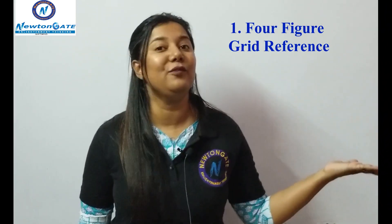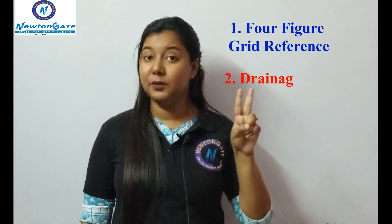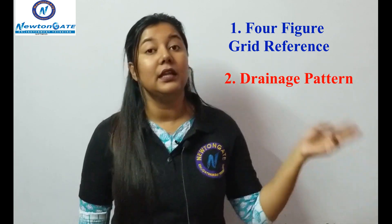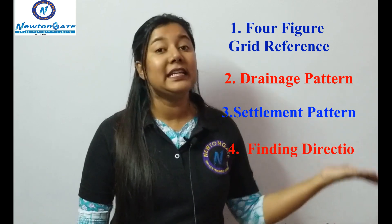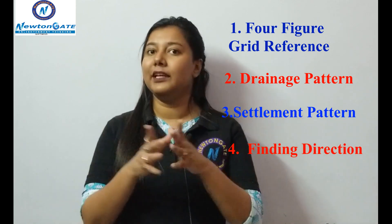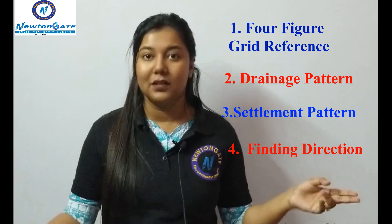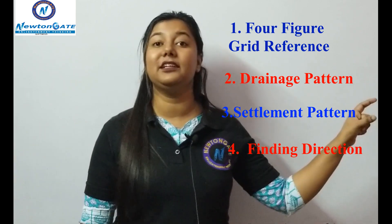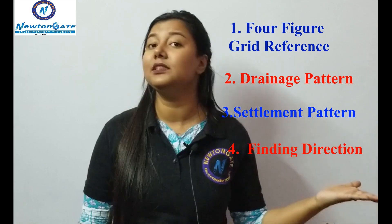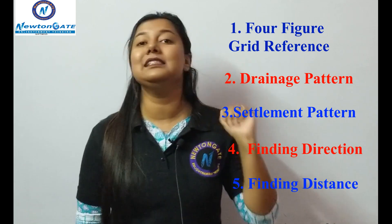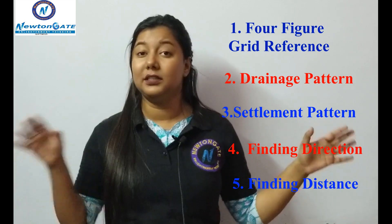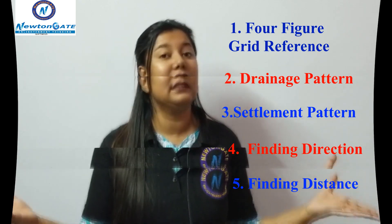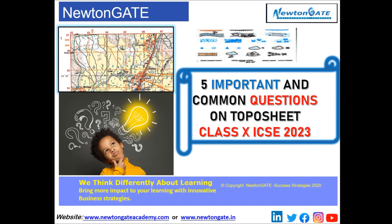Number one: four-figure grid reference. Number two: drainage pattern. Number three: identifying the settlement pattern. Number four: finding direction — that is very easy and important to know. There are two types of direction: river direction and the general direction of the settlements. And number five: finding distance. In 2023, we only have the direct distance, that is finding the direct distance. So here we start the five important questions on the Toposheet, ICSE 2023.